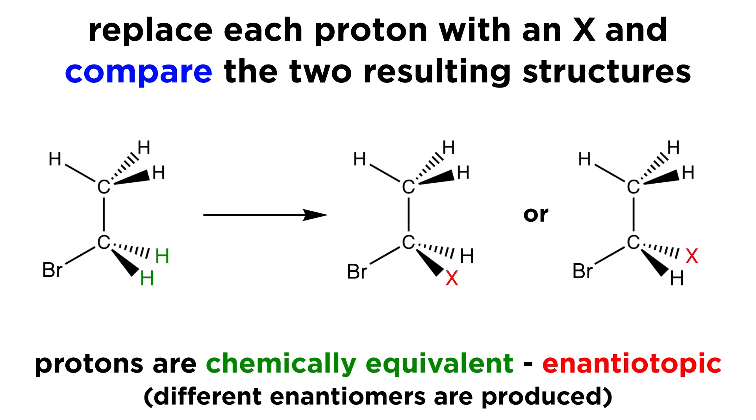Now let's say that the two compounds are not identical, but rather they are enantiomers of one another. By changing the two groups, we are generating a chiral center, and they have opposite stereochemistry. This means that the protons were enantiotopic. These will also be chemically equivalent.